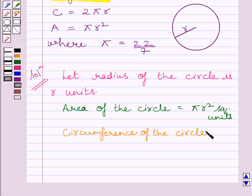We know radius of the circle is R units. So, circumference of the circle is equal to 2πR.